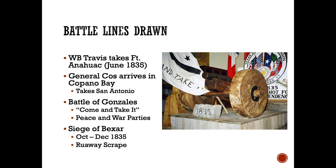Following the Battle of Gonzales, some of the Texians moved on to Béjar — the Siege of Béjar, or Siege of San Antonio. From October to December of 1835 they laid siege and eventually captured San Antonio from the Mexicans. At the same time, many Texians began moving east from their settlements, fearing that General Santa Anna was coming north from Mexico toward San Antonio.